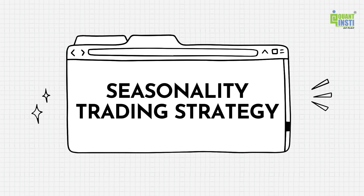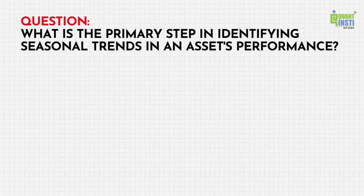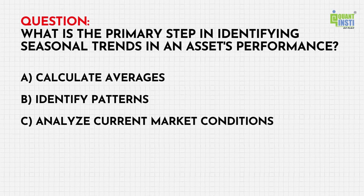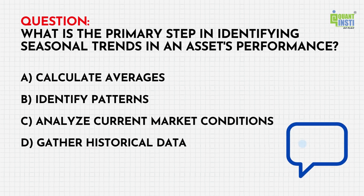Before we begin, can you answer this question? What is the primary step in identifying seasonal trends in an asset's performance? A. Calculate averages. B. Identify patterns. C. Analyze current market conditions. D. Gather historical data. Let us know your answers in the comments section below. The answer will be announced at the end of this video.